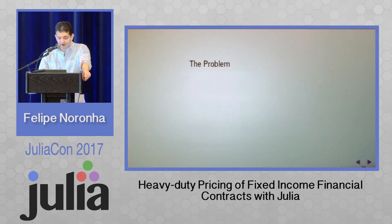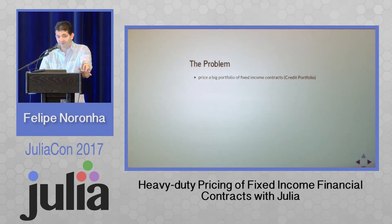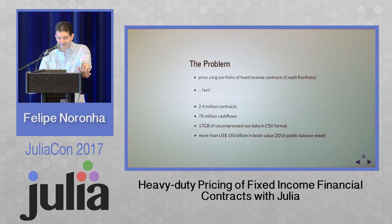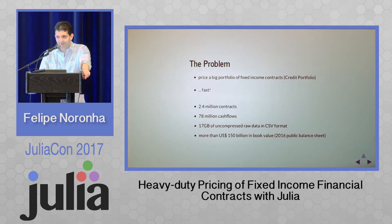So the problem. The problem I'm going to show here is to price a big portfolio of fixed income contracts — and fast. The database has about 2.4 million contracts, spreading to 78 million cash flows. It's about 17 gigabytes of uncompressed CSV format on a daily basis, and that's more than 150 billion dollars in book value according to public data.